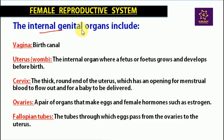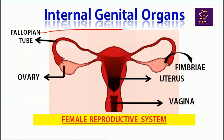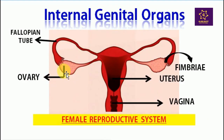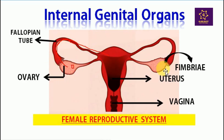Let us now discuss the internal genitalia with the help of a diagram. This is how the internal genitalia of a female looks — it is the site of fertilization and reproduction. These two are the pair of ovaries, connected to a tube-like structure known as the fallopian tube. At the junction of the ovaries and the fallopian tube, you can see finger-like structures called fimbriae, which receive the ovum from the ovary and push it into the fallopian tube.